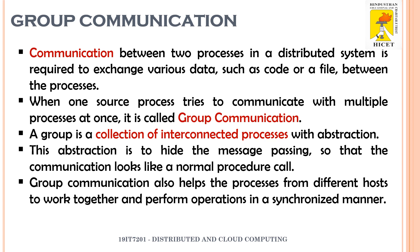Next, we want to understand what is group communication. Communication between two processes in a distributed system is required to exchange various data such as files or messages between processes. When one process tries to communicate with multiple processes, that is called group communication. A group is a collection of interconnected processes with abstractions — hiding the message details. Group communication also helps processes from different hosts to work together and perform operations in a synchronous manner.